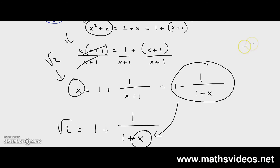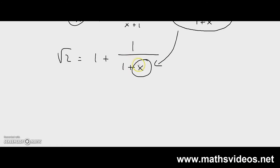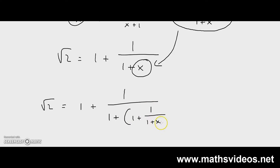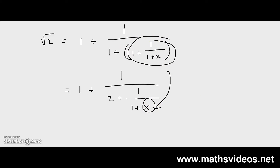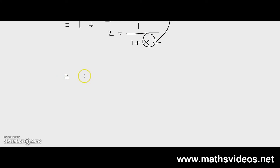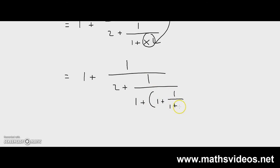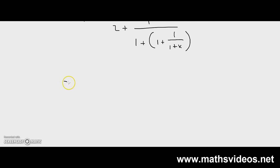If I plug the value that I've just mentioned into this x over here, I'm going to get the square root of 2 is equal to 1 plus 1 over 1 plus 1 plus 1 over 1 plus x. Now, watch what happens when I plug this value into this x. I'm going to get the square root of 2 equals 1 plus 1 over 2 plus 1 over 1 plus 1 plus 1 over 1 plus x, and this would equate to 1 plus 1 over 2 plus 1 over 2 plus 1 over 1 plus x.